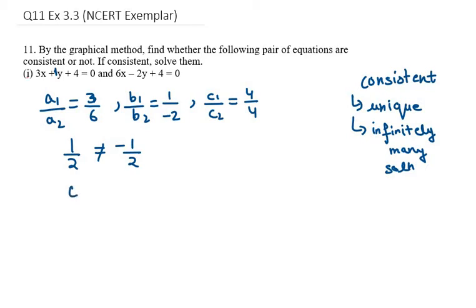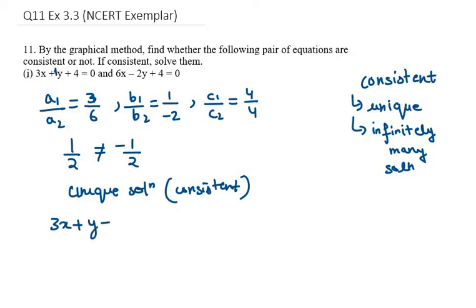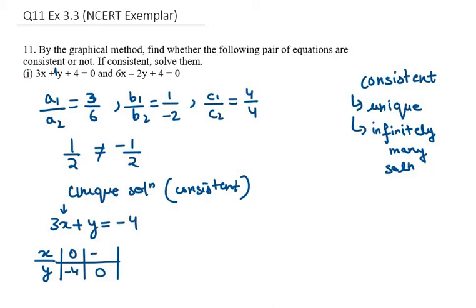It is a unique solution, so it is consistent. Now we need to solve this graphically. Let's take the first equation: 3x plus y equals minus 4. We will make a table of x and y. We will take x as 0 at one point and y as 0 at another. When x is 0, y will be minus 4.